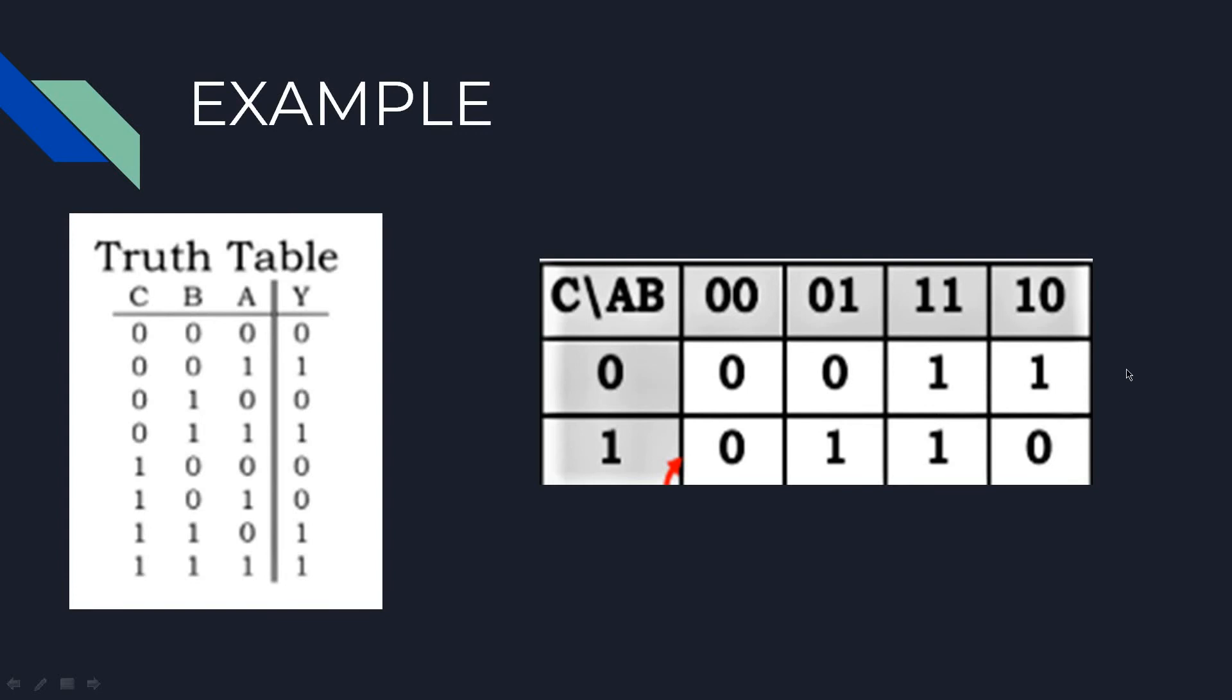So if we pair these both, as you can see that the variable associated with this is C-bar and the common variable here is A. So A C-bar, and here the variable associated with this is C and the common variable is B. So your expression will be BC plus A C-bar.